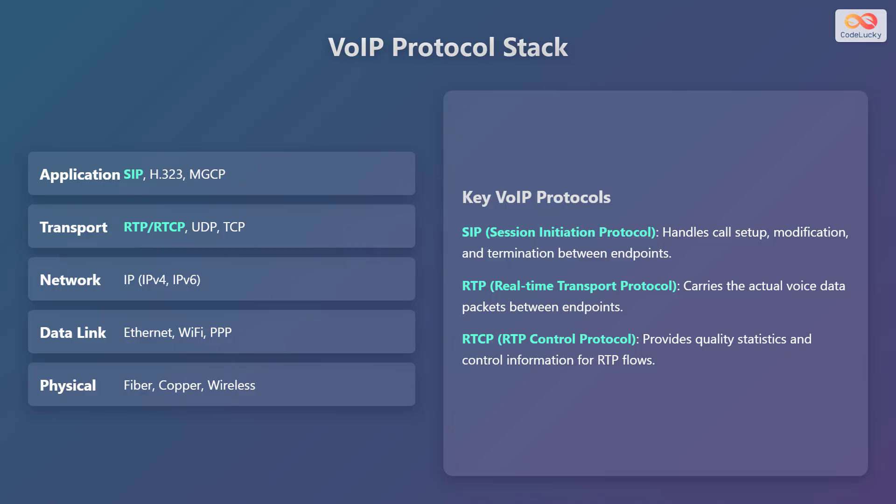Now let's focus on some key protocols. Session Initiation Protocol (SIP) is used for setting up, modifying, and ending calls between different endpoints. Real-Time Transport Protocol (RTP) is responsible for carrying the actual voice data between endpoints. Real-Time Transport Control Protocol (RTCP) provides quality statistics and control information for RTP data streams, helping to ensure call quality.